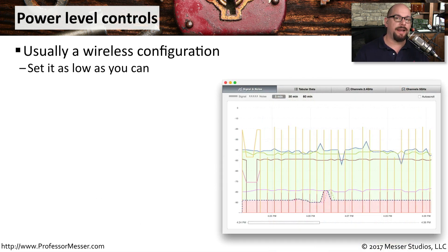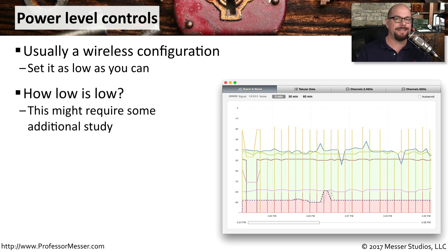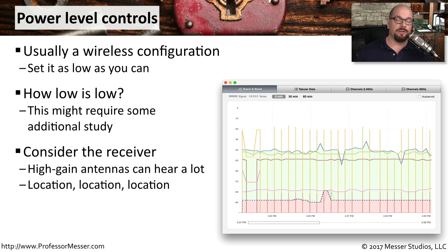Some wireless access points allow you to set how much power will be used by the wireless network. This means you could limit the power of the signal to stay inside your building and prevent it from being heard in the parking lot outside. The idea is to set it as low as possible while still being functional for all your users. You also want to consider the receiving stations and what type of antennas they might have. A high-gain antenna can hear and receive traffic much better than a low-gain antenna, so you might be able to set the power much lower for those devices.